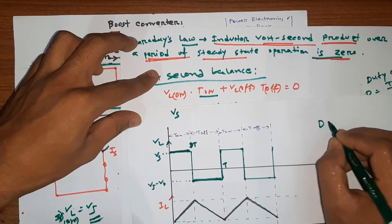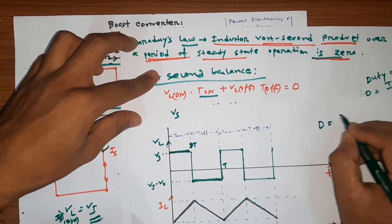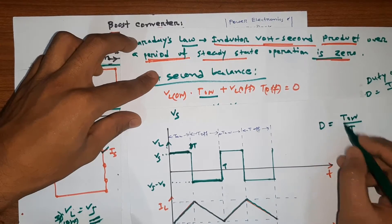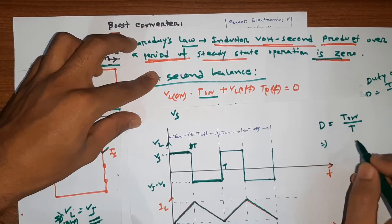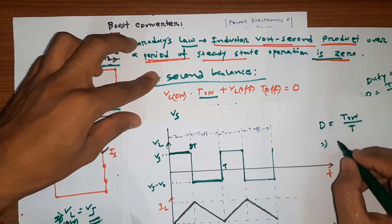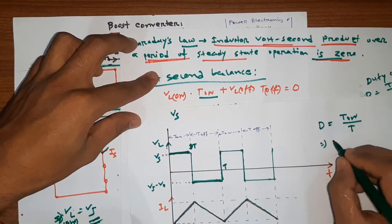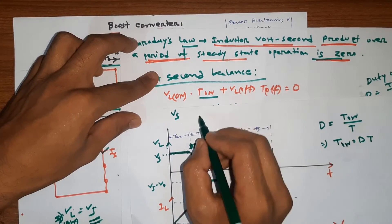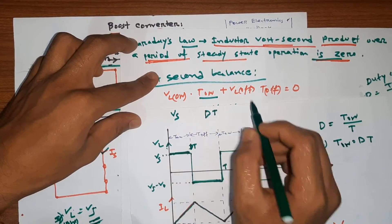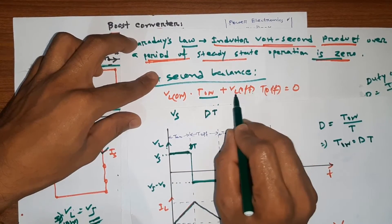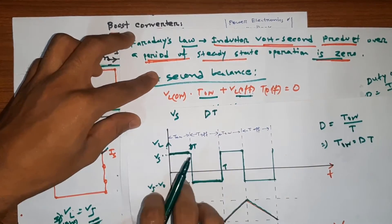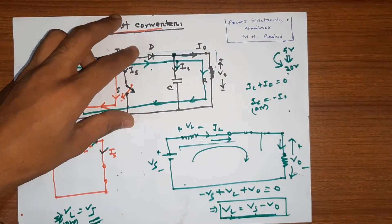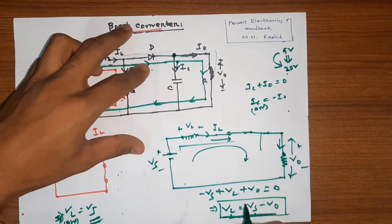The duty cycle D is defined as T_on divided by T. That means T_on equals DT. So T_on is DT.